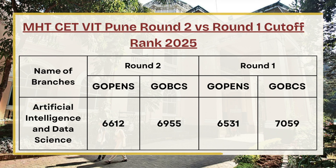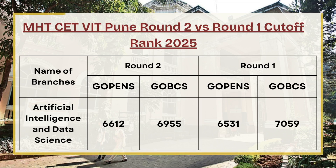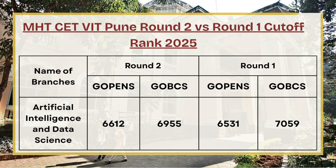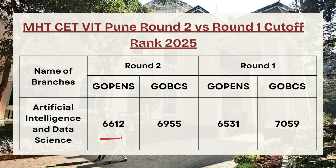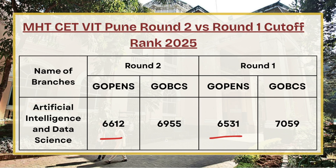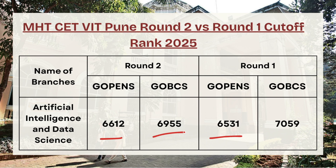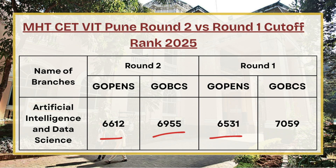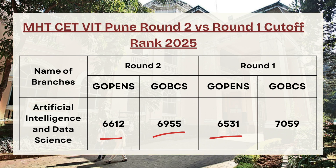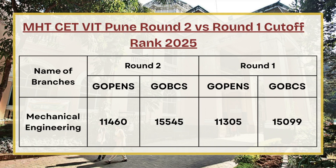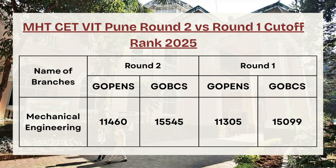Next in the list we have Artificial Intelligence and Data Science. For G Open category, the cutoff rank was 6,612 for round two whereas in round one it was 6,531. For G OBC, the cutoff rank was 6,955 in round two whereas in round one it was 7,059.